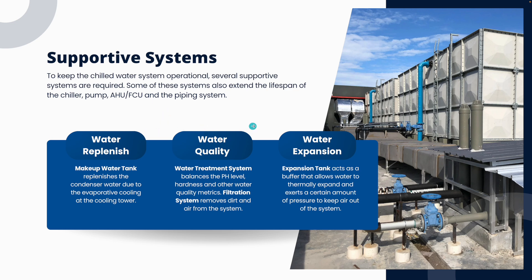The second supportive element is water quality. Within a piping system we need to maintain a certain pH level and hardness, and keep chloride levels in check, so the system performs at its best. This is handled by the water treatment system, using either chemical or non-chemical treatment. For chilled water — which is in a closed loop — we only need to balance the pH once. However, for condenser water, which is exposed to outside weather at the cooling tower, it can bring in sand, dirt, bacteria and viruses, so water treatment is mainly required on the condenser water side.